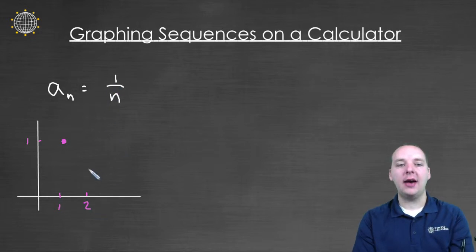When you plug in 2, you get 1/2. But there's nothing drawn between 1 and 1/2, this is just empty space. And then likewise, if this is 3, we get 1/3, and if you plug in 4, you get 1/4.